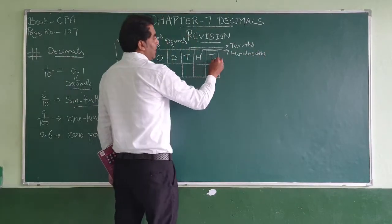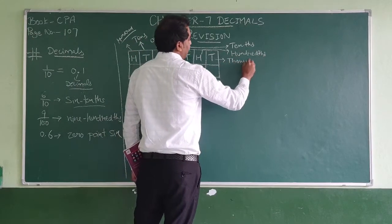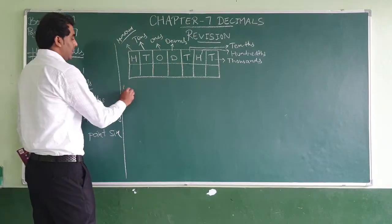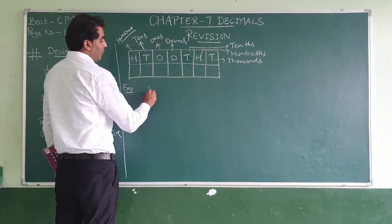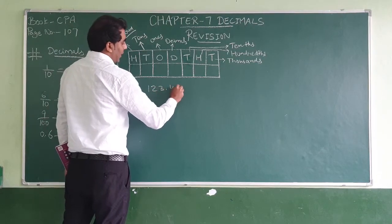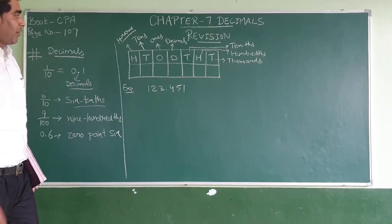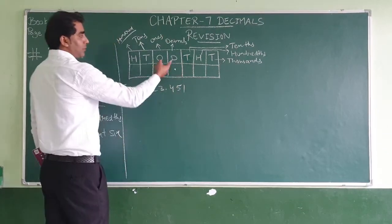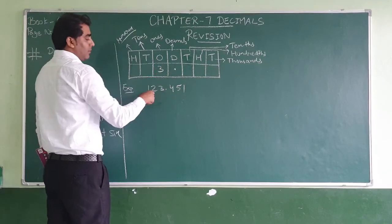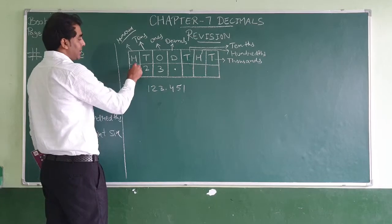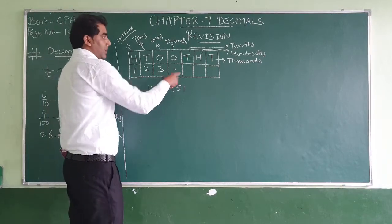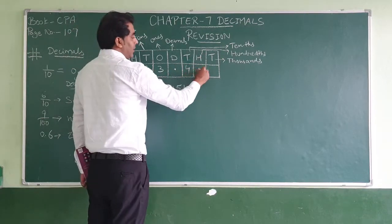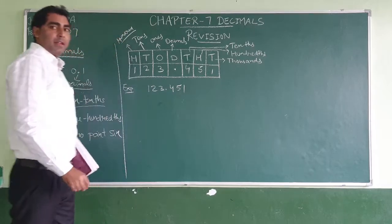And T also means thousands. For example, if we have 123.451, we write it in this table. The decimal point goes here. So the ones place is 3, the tens place is 2, the hundreds place is 1. After the point: the tenths place is 4, the hundredths is 5, the thousandths is 1.